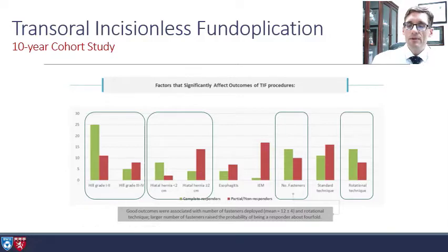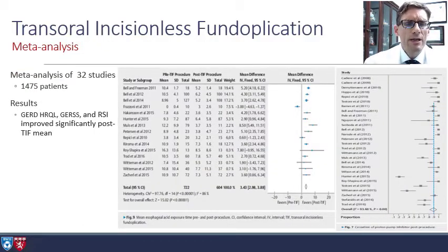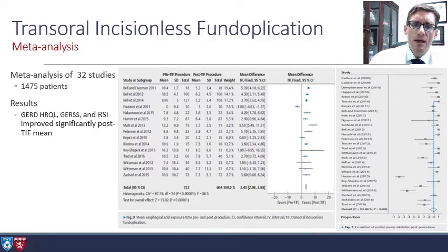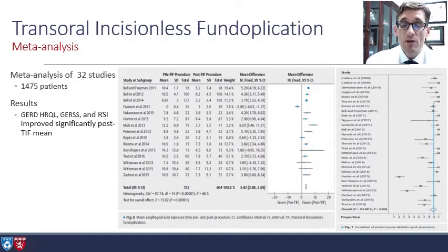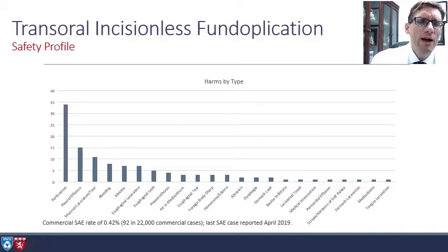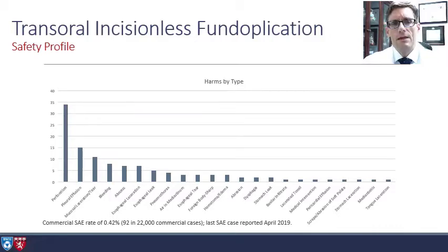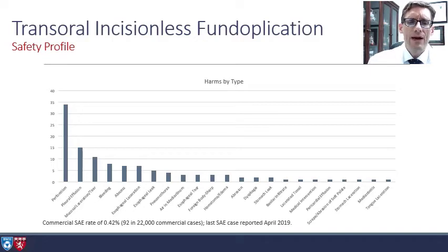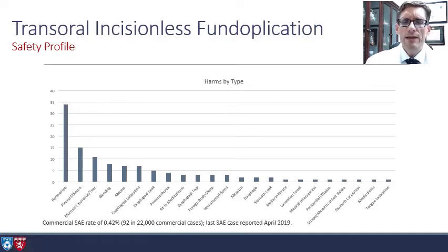A meta-analysis by Dr. Tom McCarty looked at 32 studies in over 1,400 patients. Across the board, all various quality metrics showed significant improvement in the TIF groups. Additionally, there is a reduction in acid exposure time, and roughly 90% of patients off PPIs — though this is only at one year. The safety profile shows a serious adverse event rate of about 0.42%, or 92 events out of 22,000 cases, including some perforations and pleural effusions — the things you'd expect to see with endoscopic procedures — but really quite a safe procedure.